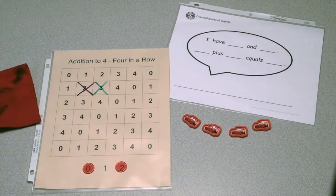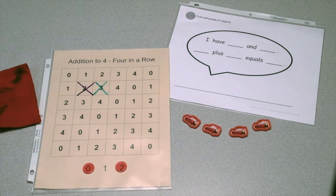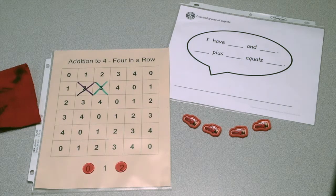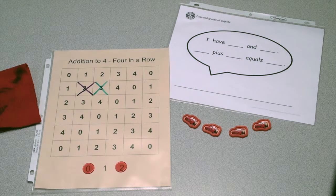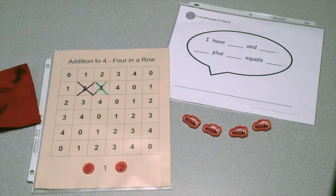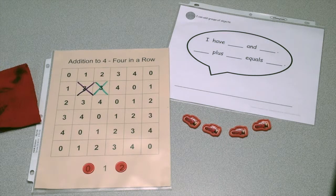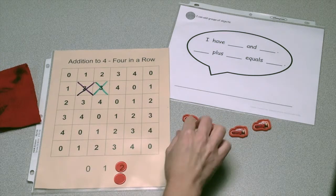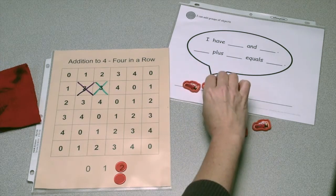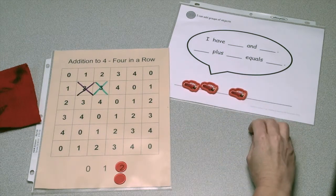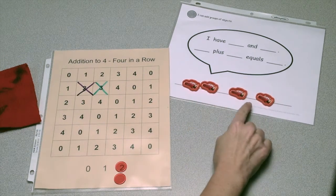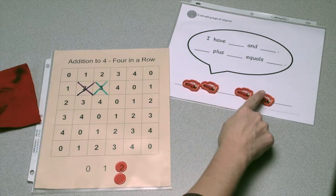Some kindergarten students would benefit from the additional scaffold of using manipulatives to physically match and count the two addends chosen. Students can use cubes or other objects to make a concrete representation on the bottom of their speech bubble. 2 and 2. 2 plus 2 equals 4.